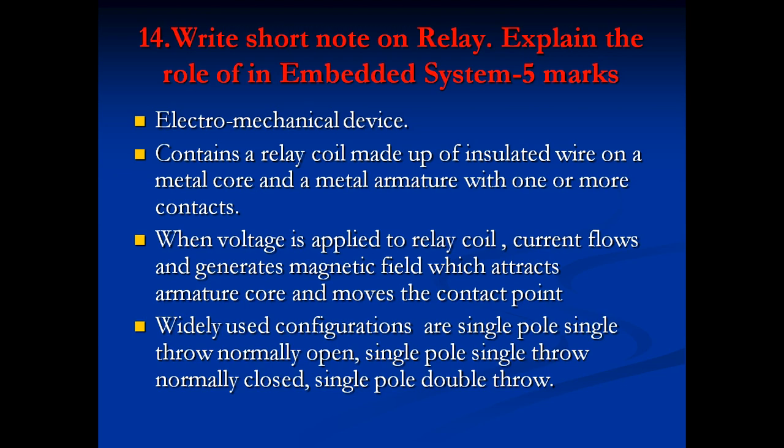Next question: write a short note on relay and explain the role of relay in embedded systems, 5 marks. A relay is an electromechanical device containing a relay coil made of insulated wire on a metal core and a metal armature with one or more contacts. Whenever voltage is applied to the relay coil, current flows and generates a magnetic field which attracts the armature core and moves the contact point.